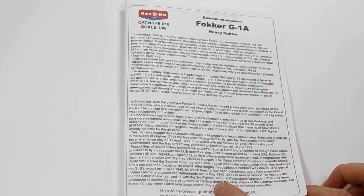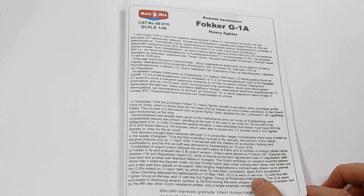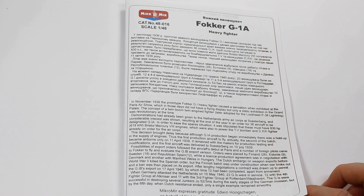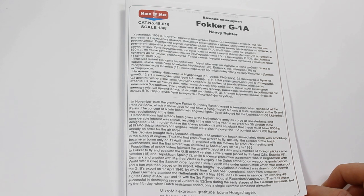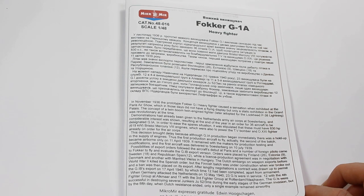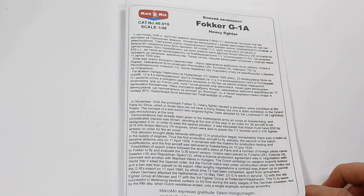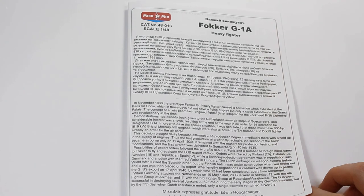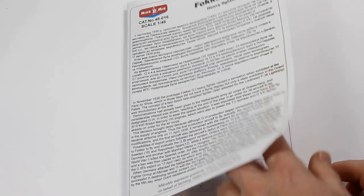I'm not sure there was a huge amount used. When Germany attacked the Netherlands on the 10th of May, 23 G-1s were in service: 12 with the 4th fighter group at Alkmaar and 11 with the 3rd fighter group at Rotterdam. The G-1s were successful in destroying several Junkers Ju-52s during the early stages of the German invasion, but by the fifth day when Dutch resistance ended, only a single example remained airworthy.